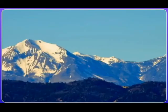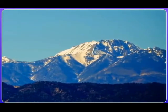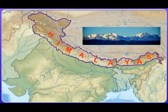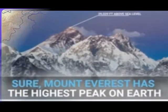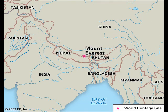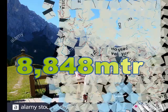The Andes mountain in South America is the longest mountain range in the world, totally 7,000 kilometers. The highest point of a mountain is known as a peak. Mount Everest is the highest peak in the world at 8,848 meters, located in Nepal.